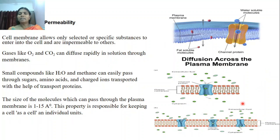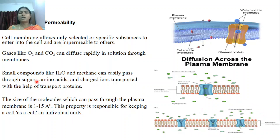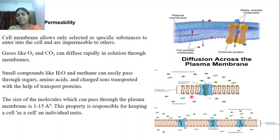By the simple mechanism of diffusion, molecules move from the region of higher concentration to the region of lower concentration. These gases diffuse, and small compounds like water and methane can also easily pass through this membrane. Amino acids, sugars, and charged ions transport with the help of membrane proteins, which are channel proteins.